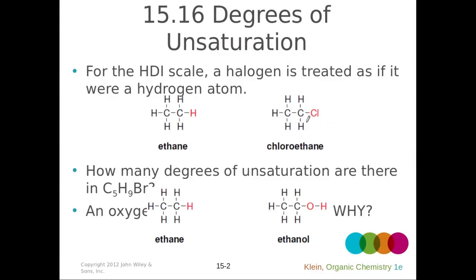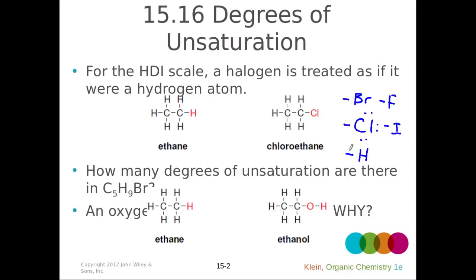How do other types of atoms in the molecule potentially affect the degrees of unsaturation? Consider a halogen like chlorine. The bonding pattern for a halogen is just one bond and three lone pairs. Compare that to the bonding pattern for hydrogen — also one bond. So obviously the other halogens — bromine, fluorine, and iodine — are the same. If we have any of these atoms on the molecule, it acts just like a hydrogen because it has the same number of bonds, just one bond. So we don't really have to treat it any differently than we would a hydrogen.